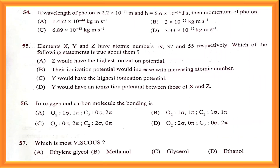Question number fifty-four: the momentum of a photon — if you calculate, the answer is option B: 3 × 10⁻²³ kg·m/s. Question number fifty-five: the ionization potential lies between those of X and Z. This is the correct answer.